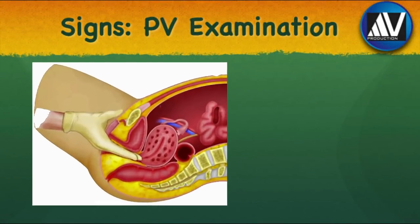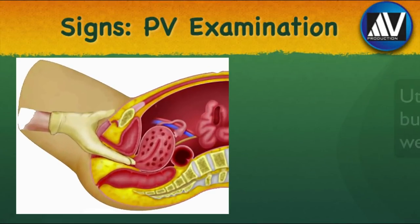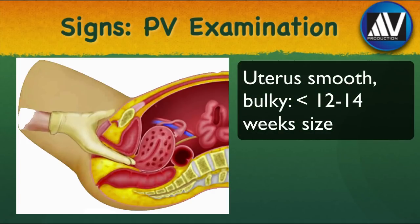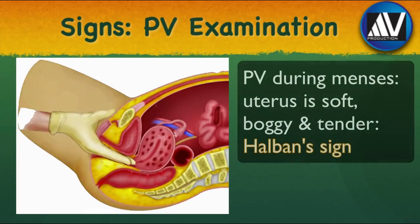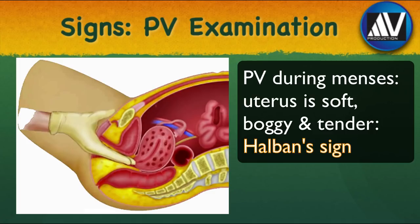On per vaginal examination, the uterus is smooth and uniformly bulky but does not exceed 12–14 week size. If the per vaginal examination is done during menses, the bulky uterus becomes soft, diffusely boggy, and tender. This is called the characteristic Hegar's sign. However, one must remember that exogenous estrogen administration may also produce a similar effect.